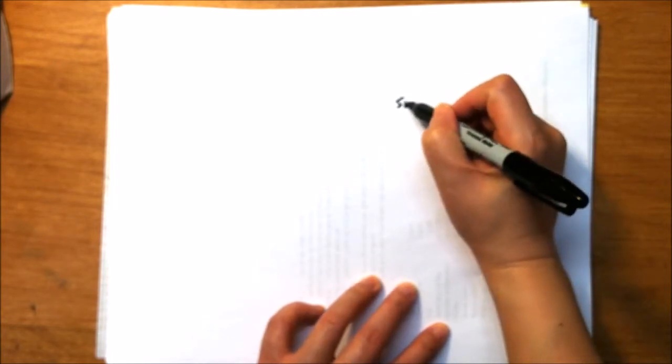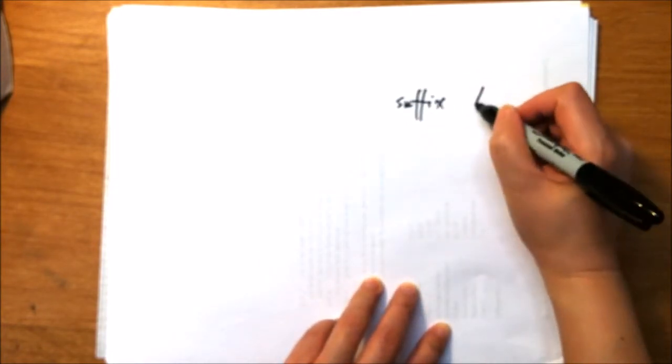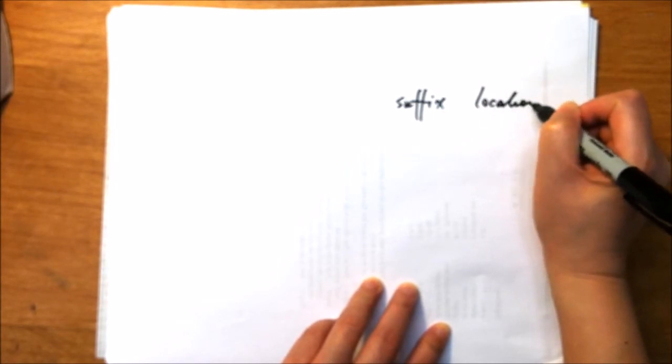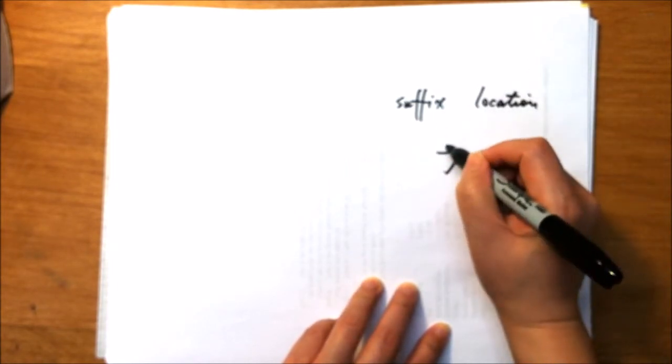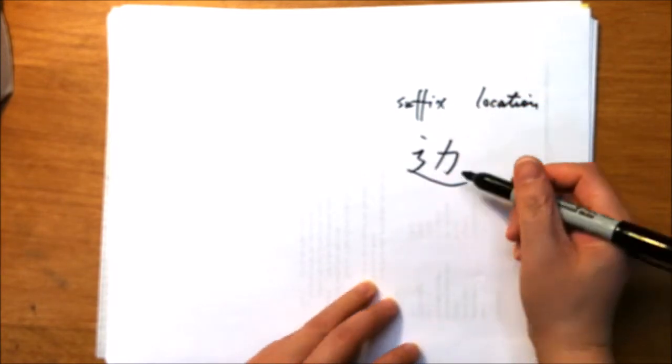In our daily speaking, 边 often works as a suffix to describe the location. Most of the time, 边 is at the end of a word. Here's 边.